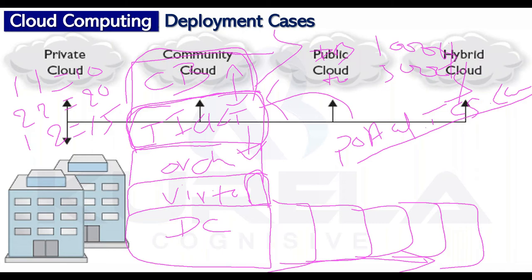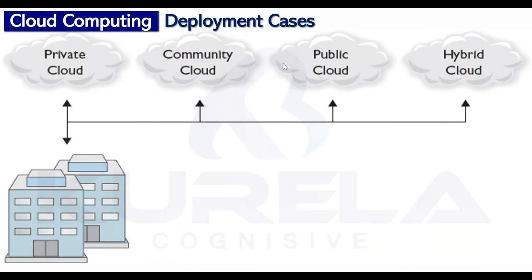TCS being an MNC has data centers in India and around the world, so servers can be created in other locations as well. Now, recall the five essential qualities of cloud computing. The first one is on-demand self-service — do we have it? Yes. If a DBA needs a server, he just hits portal.tcs.com and creates a server on his own. That's on-demand self-service.